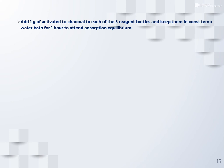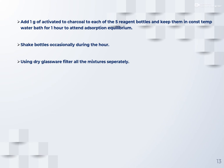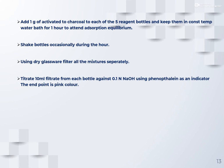During the heating process, check and shake the bottles meanwhile. Then, using dry glassware, filter all mixtures separately. Titrate 10 ml of filtrate from each bottle against 0.1 normal NaOH solution using phenolphthalein as an indicator. The endpoint is a light pink color. Then determine the normality of each solution — this will be your N2 value.